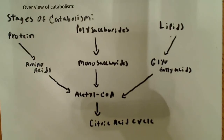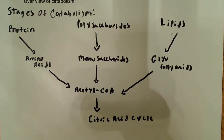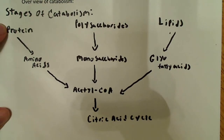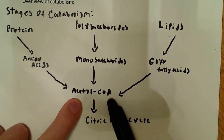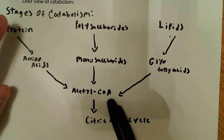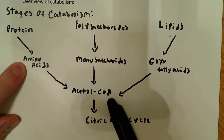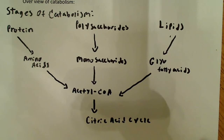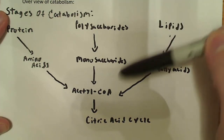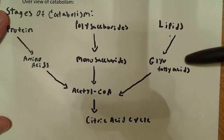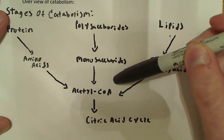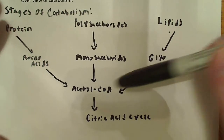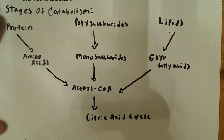The stages of catabolism show how all the different metabolic pathways converge on one central compound: acetyl-CoA. Proteins break down into amino acids, which are converted to acetyl-CoA. Polysaccharides break down to monosaccharides, eventually becoming acetyl-CoA. Lipids break down to fatty acids, then to acetyl-CoA. Acetyl-CoA is what enters the citric acid cycle — it combines with oxaloacetate to make citrate in the first reaction.